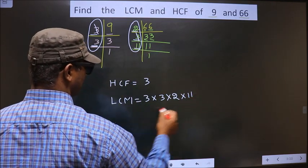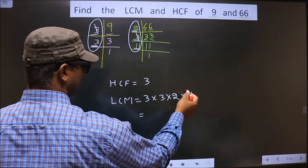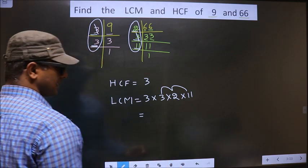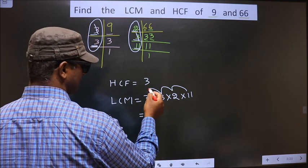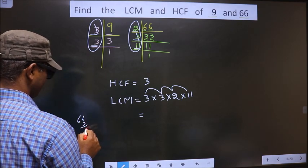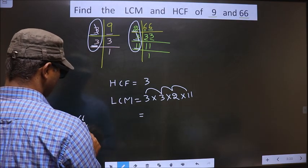So we multiply all this. 11 into 2, 22. 22 into 3, 66. 66 into 3, we get 198.